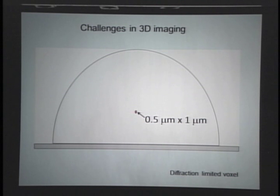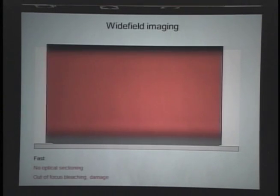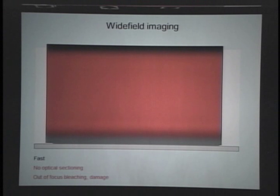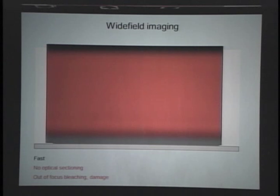How might you illuminate the worm to get this information? One approach is wide-field or epifluorescence imaging — shining a laser throughout the entire volume, getting fluorescence everywhere. For very thin samples this might work, and it's very fast because you just move the plane of focus through the volume. But there's a problem of out-of-focus blur — no optical sectioning — and a tremendous problem with out-of-focus bleaching and damage. You might be visualizing a plane down here, but you're bleaching fluorescence that occurs above.